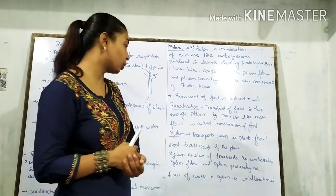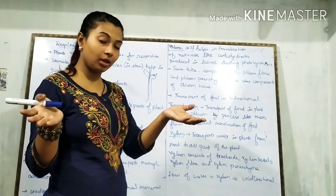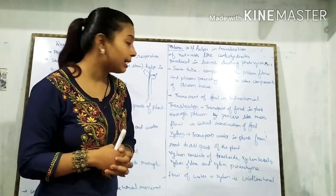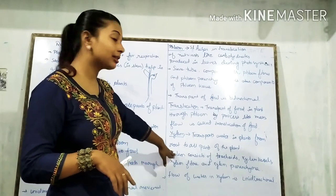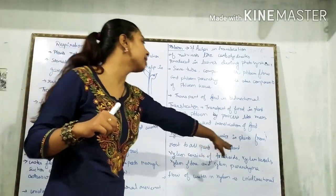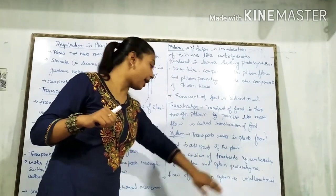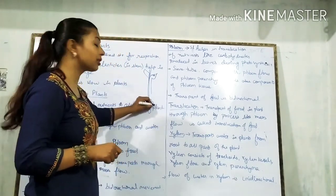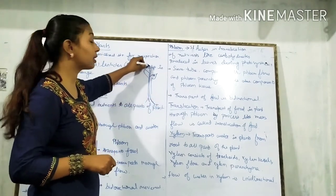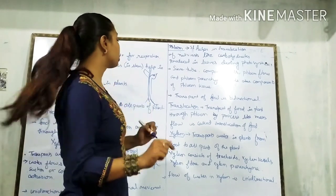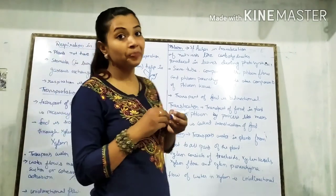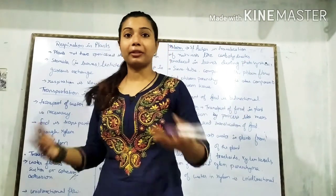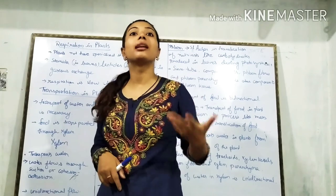Next is xylem, which is basically water transport from roots to all parts of the plant, especially leaves. There are four components of xylem: tracheids, xylem vessels, xylem fibers, and xylem parenchyma. The flow in xylem is unidirectional — uni means one — so water is transported in only one direction. I have also given a small comparison between xylem and phloem, which you can write as a difference.